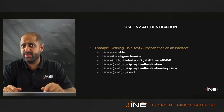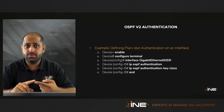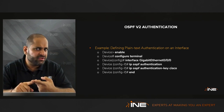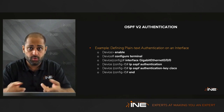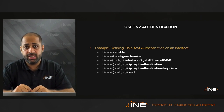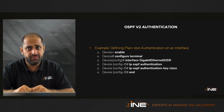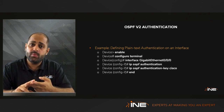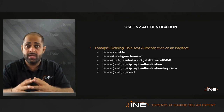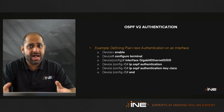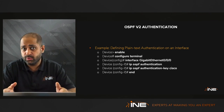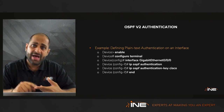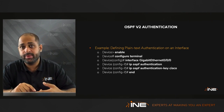To configure OSPF authentication there are 2 steps. Step 1 is to activate the OSPF authentication mechanism. That can be done on the interface with 'IP OSPF authentication' for clear text, or 'IP OSPF authentication message-digest' for MD5. Alternatively, you can activate authentication globally under the OSPF process, which activates it for all interfaces that have OSPF enabled.